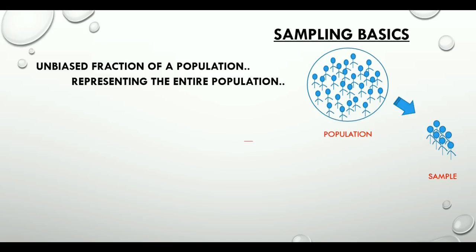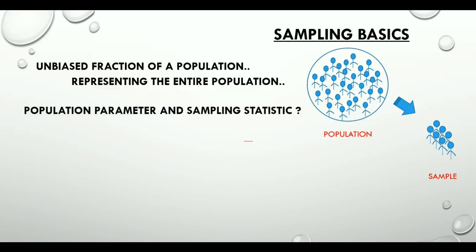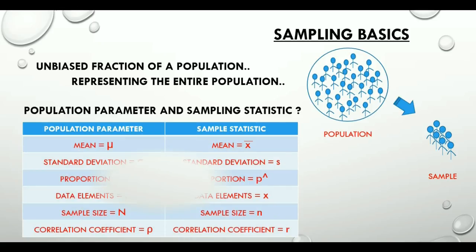Attributes of a population like mean, standard deviation, proportion, etc. are called population parameters, and those of a sample are called sample statistics. We use different notations for different population and sample attributes, which are shown in a tabular format here.